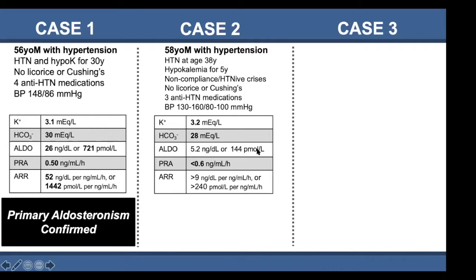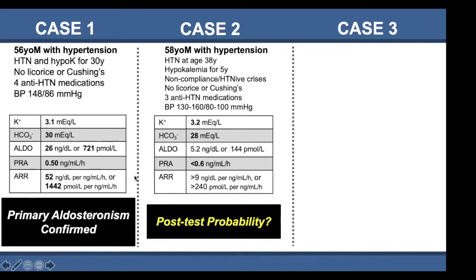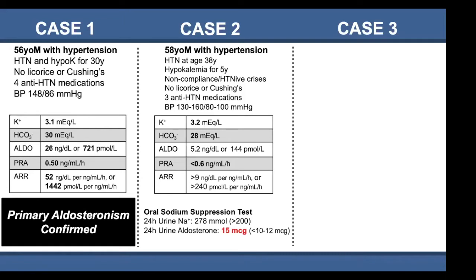His aldosterone level is more modest — 5.2 nanograms per deciliter or only 144 picomoles per liter — yet his renin is suppressed, making the aldosterone-to-renin ratio elevated. Many people would go from thinking this is very likely primary aldosteronism to seeing these results and thinking it can't be, because the aldosterone level is not high enough. But this patient does have primary aldosteronism. He underwent an oral sodium suppression test on a high-sodium diet, and in the context of volume expansion and renin suppression, he was unable to suppress his aldosterone production.